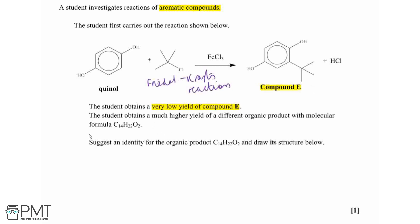The student obtains a much higher yield of a different organic product with a molecular formula of C14H22O2. We need to suggest an identity for this organic product and draw its structure. First, let's work out the molecular formula of compound E, which contains carbon, hydrogen, and oxygen only, so we can see how this new product differs.